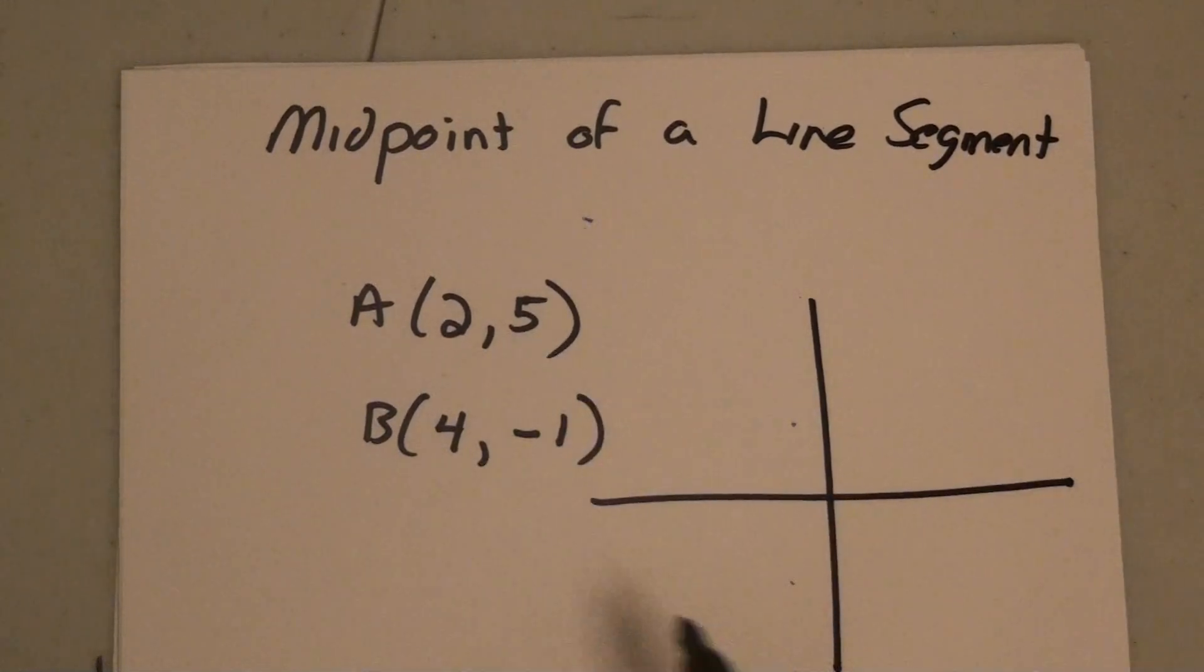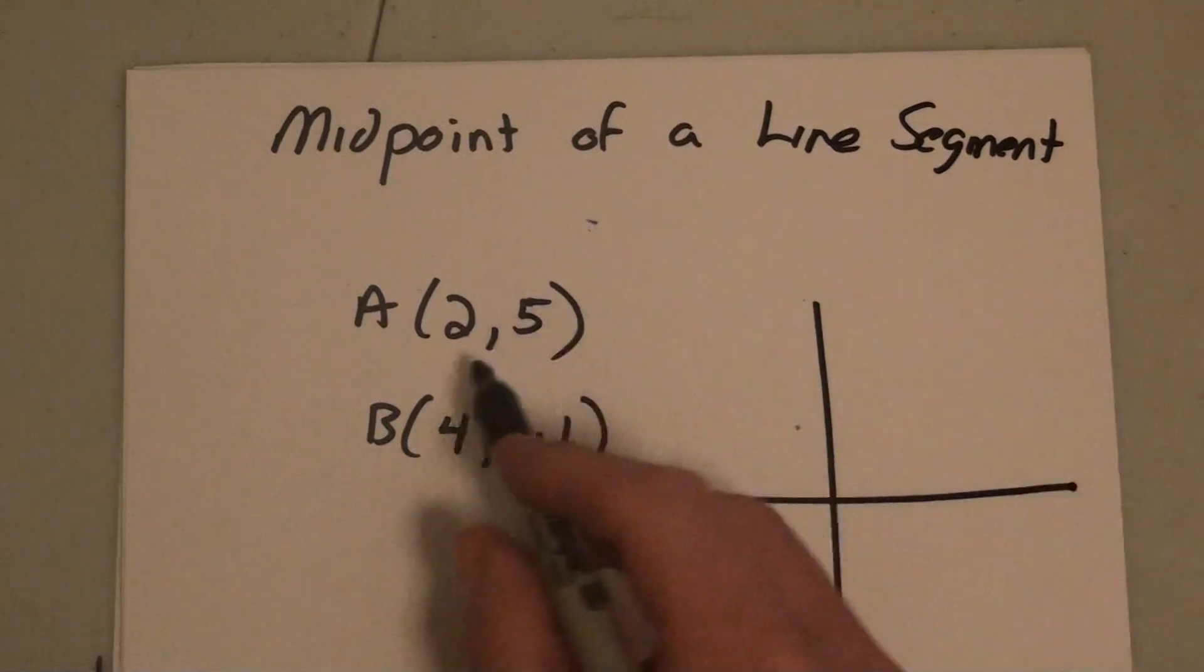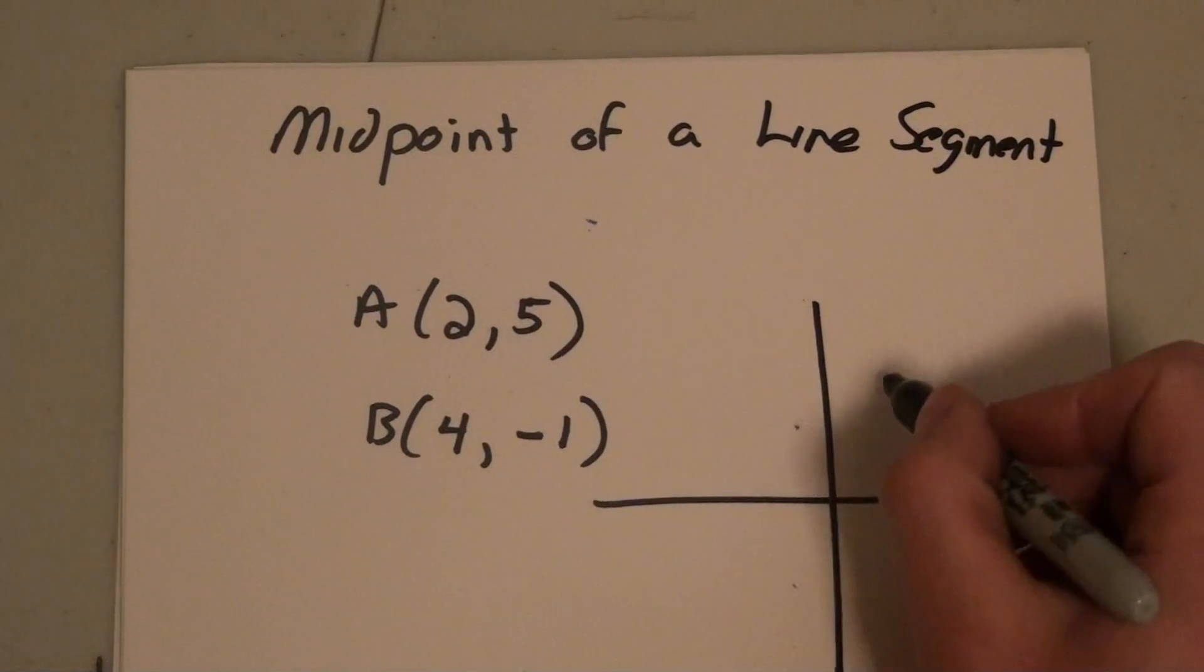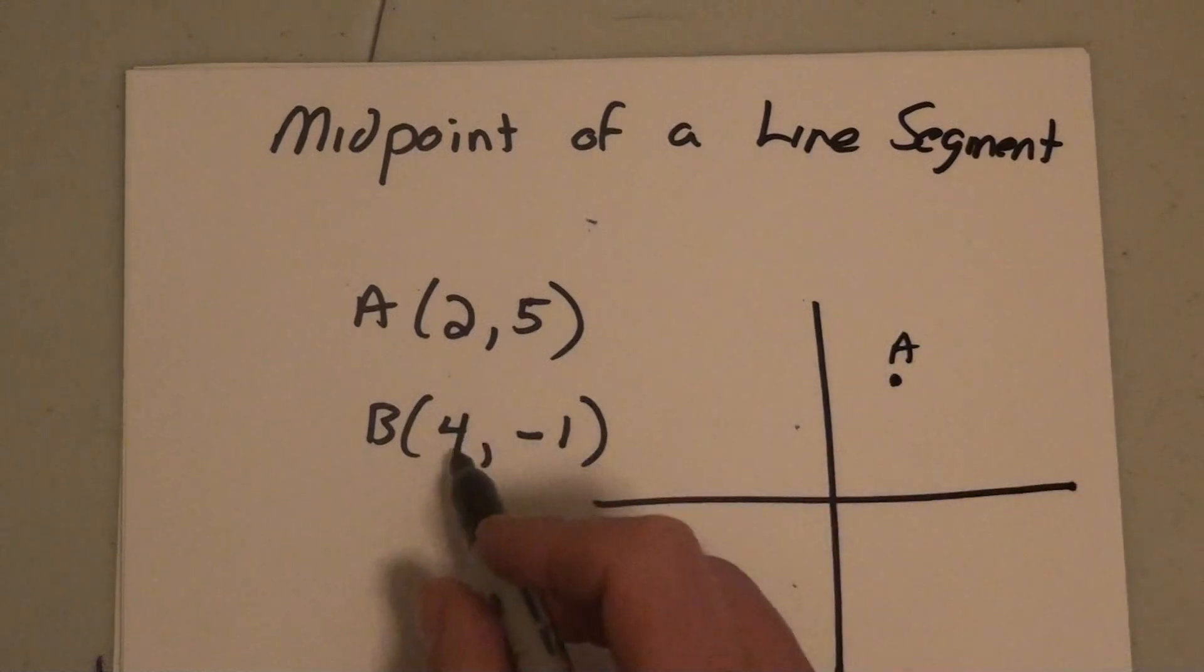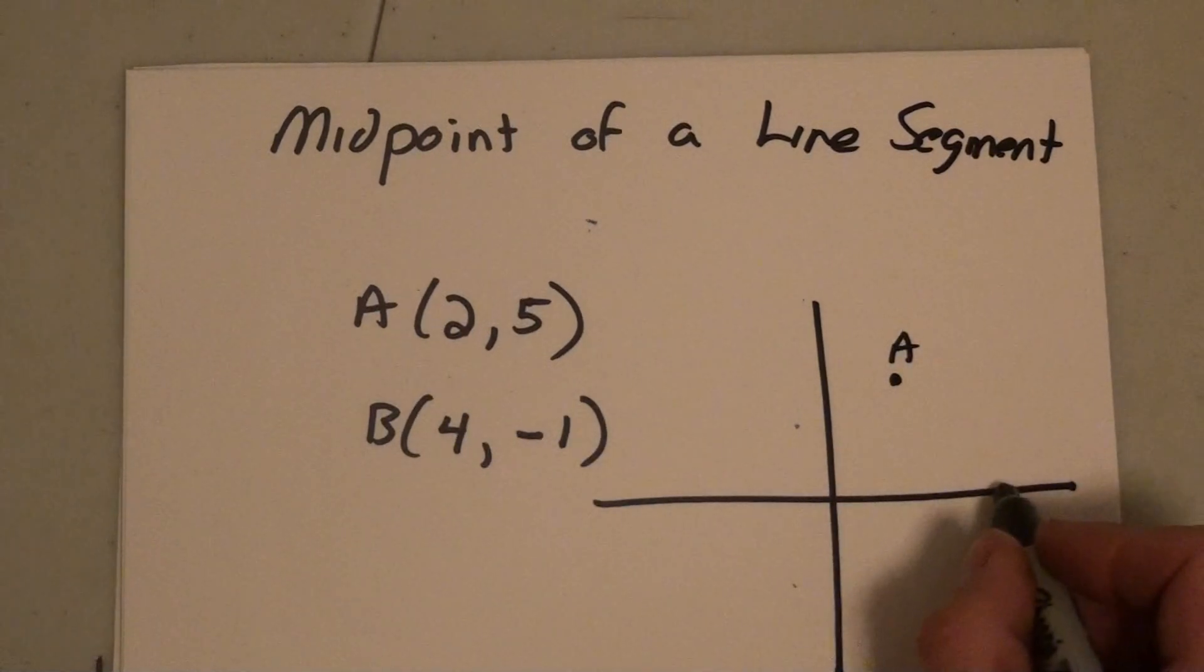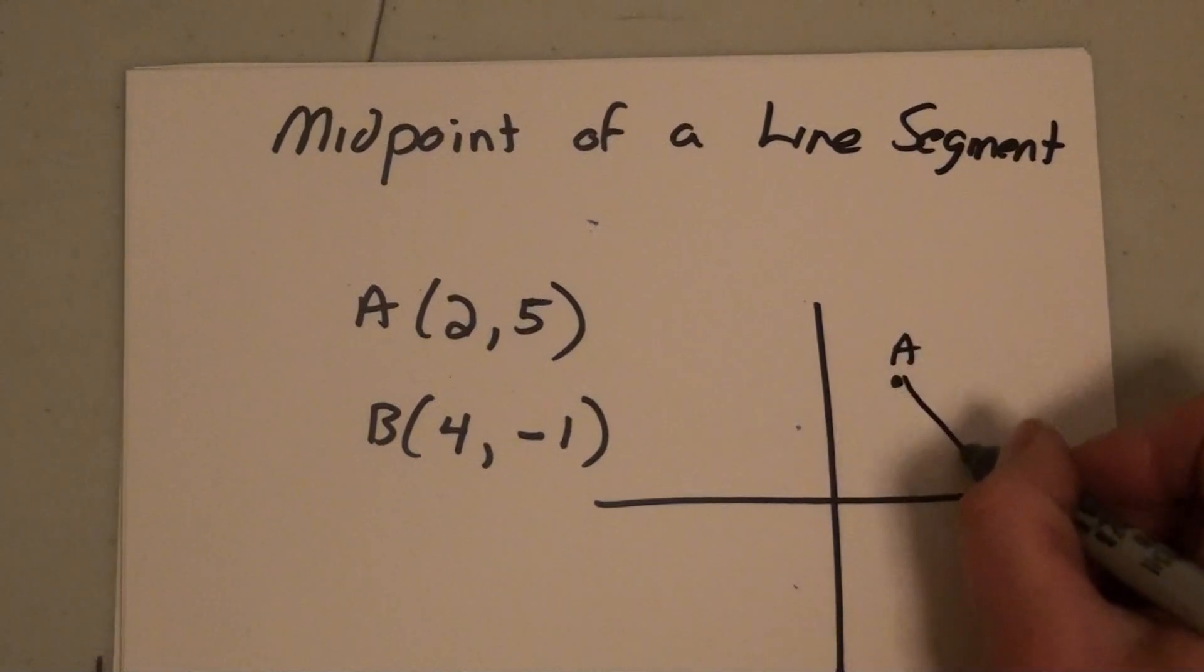If I have two points A and B, the point A is at 2,5, so let's see, over 2 and up 5. That's point A, and point B which would be the point 4,-1, so over 4 and down 1. Point B, and I have a line connecting those.